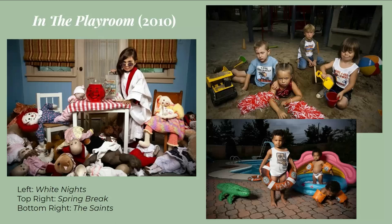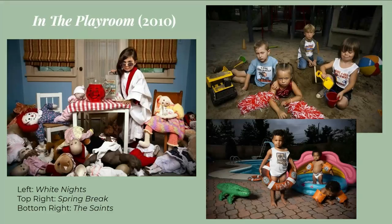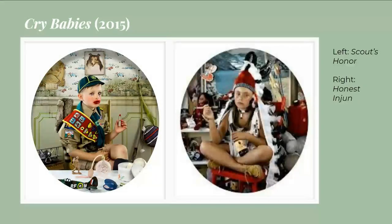'Spring Break' is a reference to the disappearance of Natalee Holloway, an 18-year-old who disappeared while on her senior class trip to Aruba. Though with the body not found and three viable suspects, there has been no resolution to the case. The three boys surrounding the child dressed as a cheerleader wear shirts with references to the case and stand in for her alleged killers. 'The Saints' sees three very young Black children playing in a pool wearing FEMA floaties, with the child in the foreground wearing a tank top alluding to the Louisiana Saints football team — a critique of FEMA's response to Hurricane Katrina.